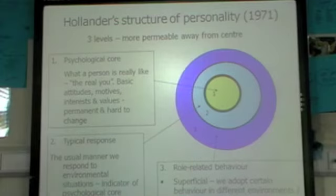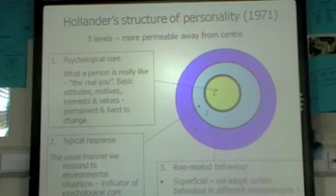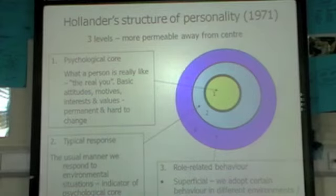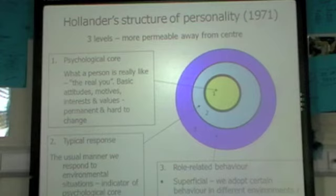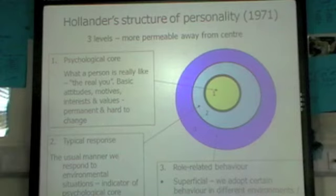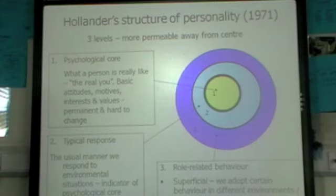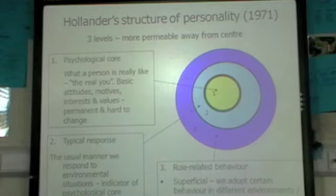A good example of interactionist theory is Hollander's model, which looks at three levels of personality. At the centre is your psychological core — the real you, how you are born — which is the trait theory part and is very difficult to change, shown by a thick line around that circle. Next is your typical response, which gives us a way to measure your core by observing your behavior in most situations. Third is role-related behavior, which is easier to change and adapt depending on the environment.